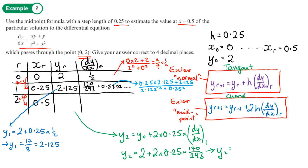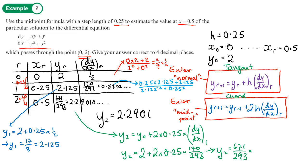Now calculate the gradient at (x₁, y₁) = (0.25, 2.125): dy/dx = (0.25 × 2.125 + 2.125) / (2.125² + 0.25²) = 170/293 ≈ 0.5802. Now apply the midpoint formula: y₂ = y₀ + 2h · (dy/dx)₁ = 2 + 2 × 0.25 × (170/293) = 671/293 ≈ 2.2901. So our estimate for y at x = 0.5 is 671/293, approximately 2.2901.